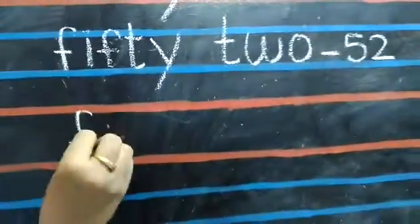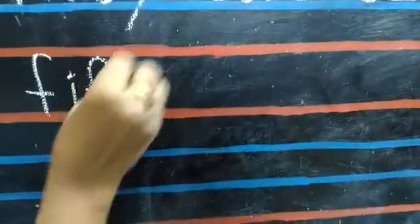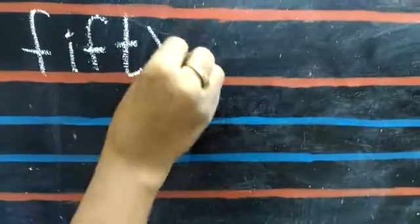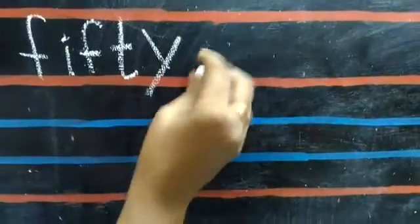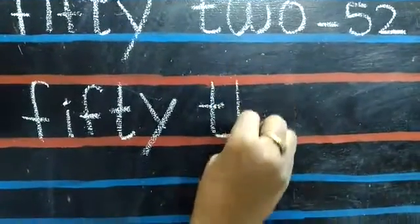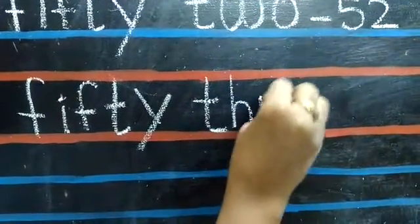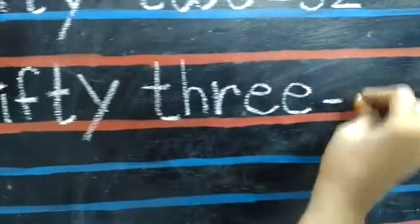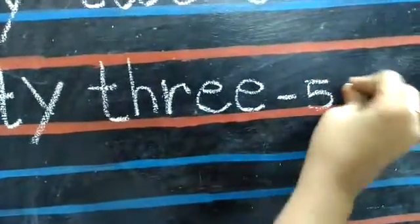F-I-F-T-Y, fifty. After two, you should write three. T-H-R-E-E, three. Fifty-three, 53.